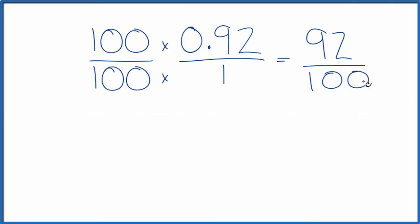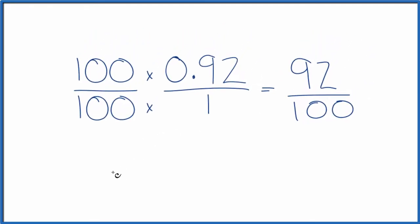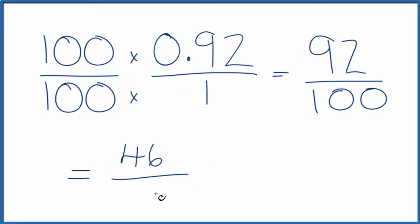Since 92 and 100 are both even numbers, let's divide them by 2. 92 divided by 2, that equals 46. 100 divided by 2, that equals 50.